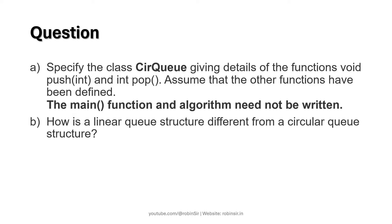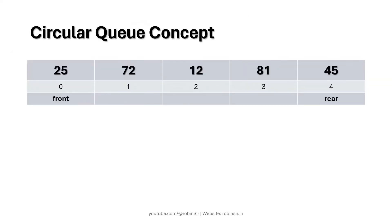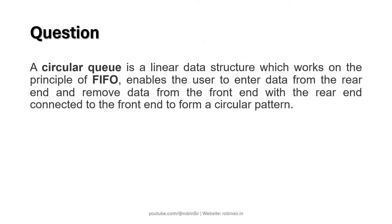The second part of the question asks: how is a linear queue structure different from a circular queue structure? The answer is already given in the question itself — in a circular queue, the front end and the rear end are connected, whereas this is not the case in a normal linear queue.